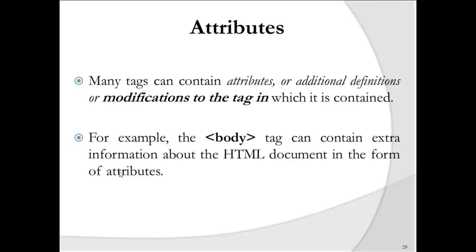Many tags may contain attributes, which provide additional function definitions or modifications to the tag. For example, the body tag can contain extra information such as background color or background image to make the page look different. Attributes are placed inside the tag they modify, and a tag can have multiple attributes separated by spaces.